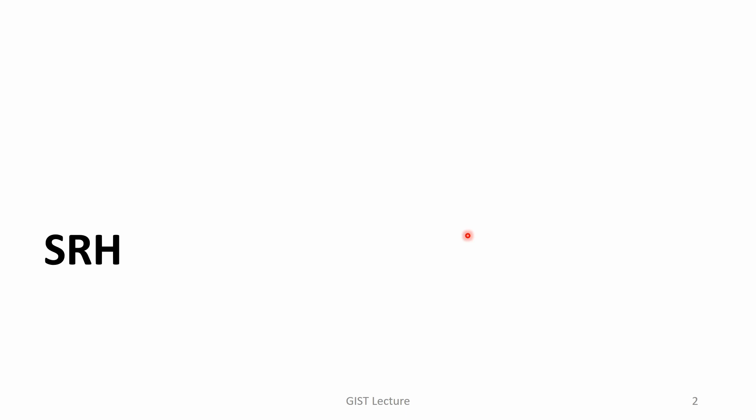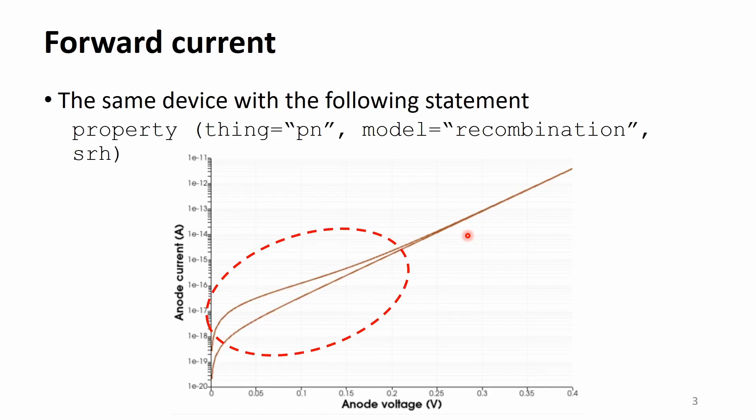Before starting today's lecture, the simulation result with the SLH model are shown. First, the forward current of a PN junction is simulated. This curve shows the one without any recombination process. When the SLH model is activated, the curve is changed.